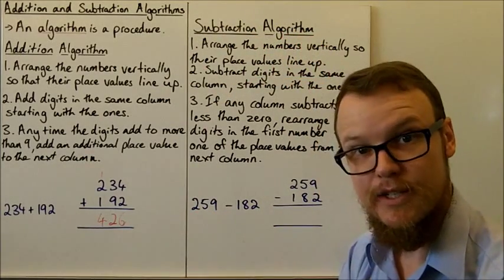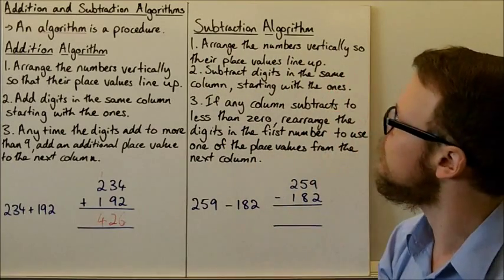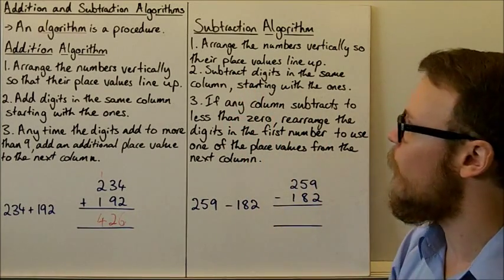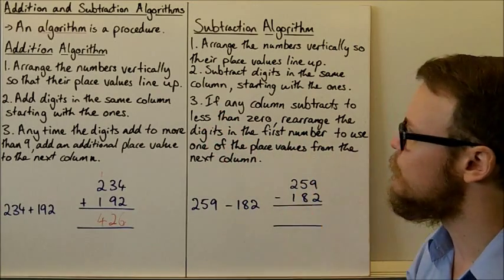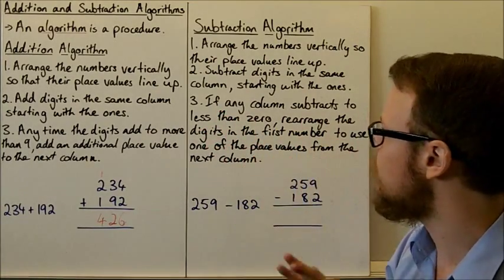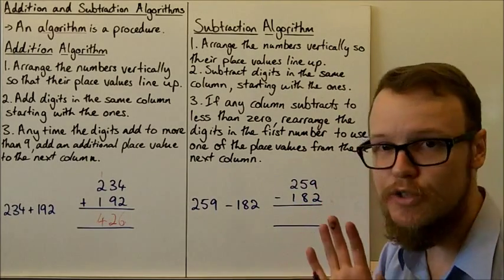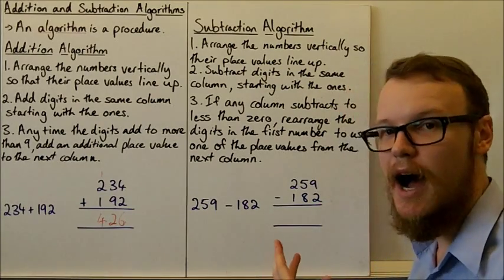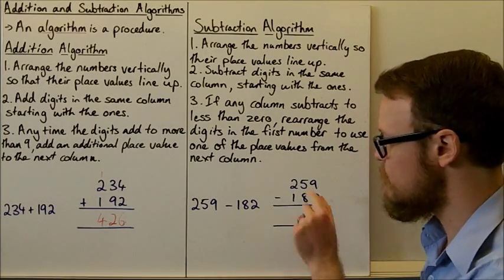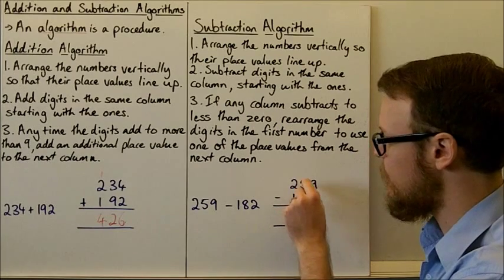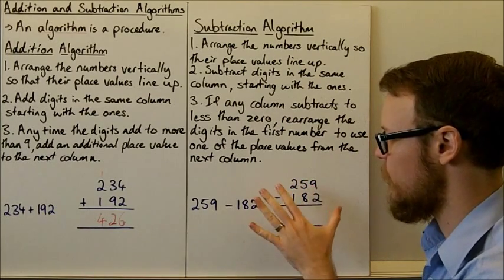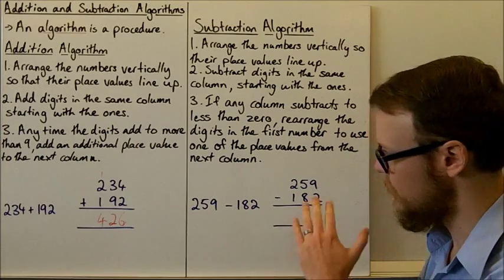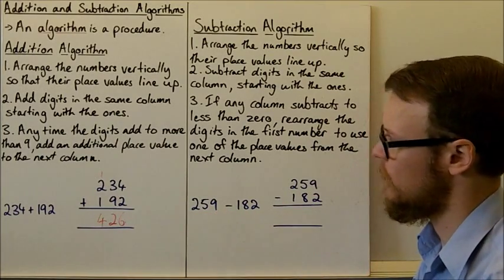Our subtraction algorithm is similar, but it has some slight differences. We still arrange the numbers vertically so that their place values line up and we still subtract them in order starting with the ones and then moving to the tens and moving to the hundreds. However, if we get any columns subtracting to less than zero, we need to do a bit of rearranging with the digits in the first number to make sure that we can subtract and get a positive number. So we essentially modify the top number to incorporate one of the place values from one of the values higher into the column that we are trying to subtract.